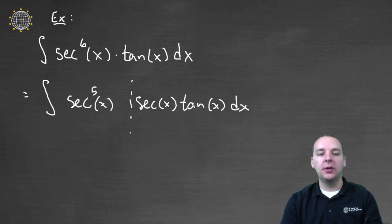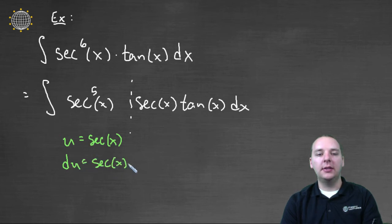So here's why this works out so well: if you now chose u to be secant of x, then your du would be secant of x times tangent of x dx.